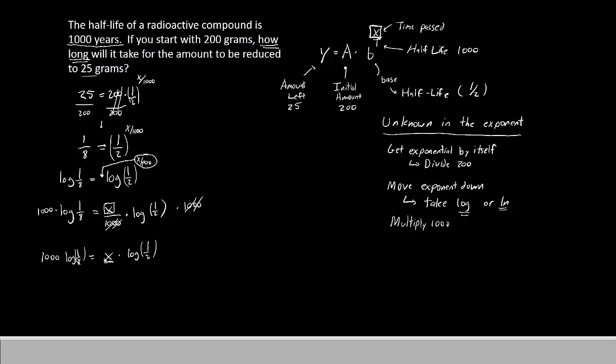Again, still trying to get the x by itself. So now we will divide by log of 1 half. So if we divide by log of 1 half on both sides, we will end up with a massive fraction on the left. But the right will be completely simplified. So now all we are left with is x equals 1,000 times log 1 eighth divided by log 1 half.